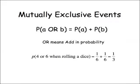As a concrete example, suppose you wanted to know the probability of rolling a 4 or a 6 on a die. You take the probability of 4, which is a 6th, add it to the probability of 6, which is also a 6th, and you get 2 sixths, which cancels down to a third.